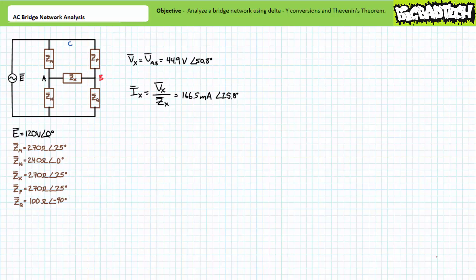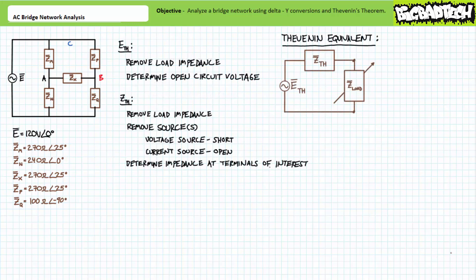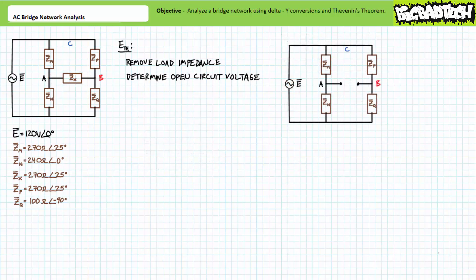Let's try analyzing this same complex bridge circuit using Thevenin's theorem — if everything is correct we should obtain the same results. Bridge network analysis using Thevenin's theorem requires solving for two properties: ETH, the Thevenin equivalent voltage, and ZTH, the Thevenin equivalent impedance seen by the load. In this case, our load of interest is element ZX. Let's start by solving for ETH.